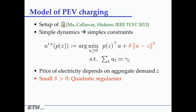Z is the aggregate variable — the total demand of everyone else. When there's high demand, the price is high; when there's low demand, the price is low. Callaway and Hiskens also add a regularization term — a quadratic regularizer — to make sure things settle down. I'll show in a minute that this has an algorithmic effect, but it's somewhat arbitrary.